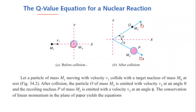Let the particle of mass m1 moving with velocity v1 collide with a target nucleus m0 at rest. After collision, the particle of mass m3 is emitted with velocity v3 at angle theta, and the recoil nucleus of mass m2 is emitted with velocity v2 at angle phi. The conservation of linear momentum in the plane of paper yields the equations. It can be an elastic or inelastic collision.